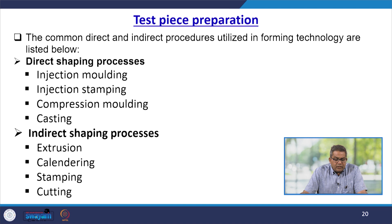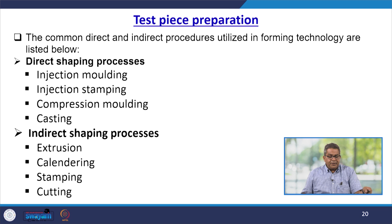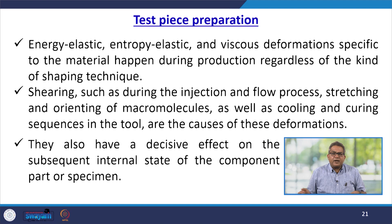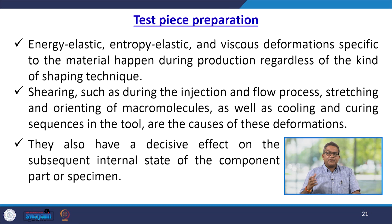The common direct or indirect procedures utilized in forming technology are: direct shaping processes — injection molding, injection stamping, compression molding, and casting — and indirect shaping processes — extrusion, calendering, stamping, and cutting. Energy-elastic, entropy, or viscous deformation is specific to the material happening during production, regardless of the kind of shaping technique.